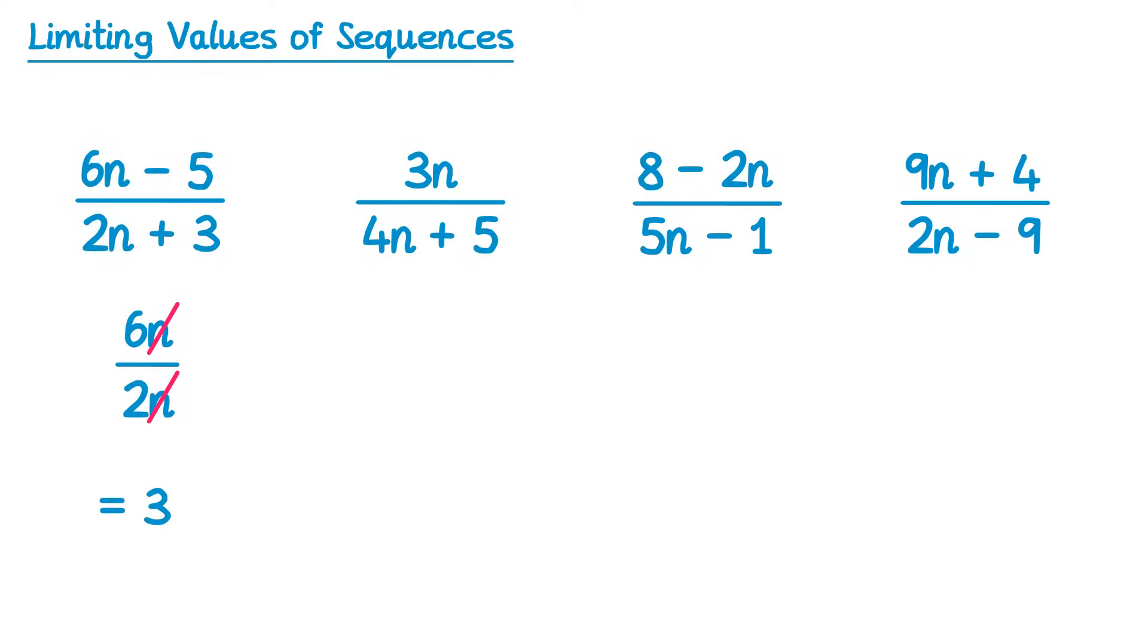We'll try this next one. Now we've only got the plus 5 on the bottom here, so we would end up with 3n over 4n. Cancel out the n, so you've got 3 over 4, which is 3 quarters, so 0.75.